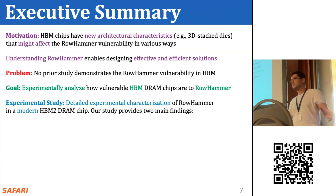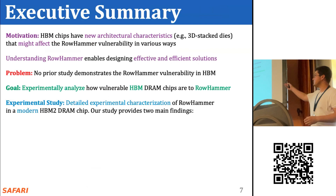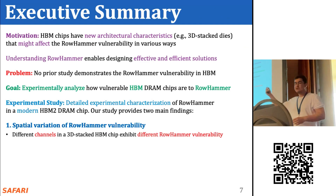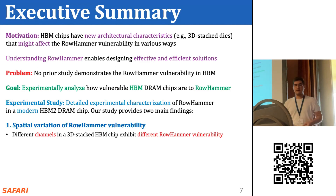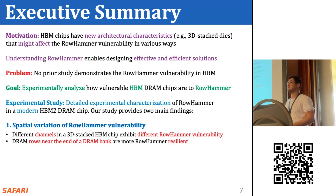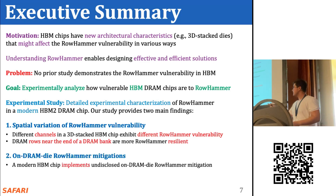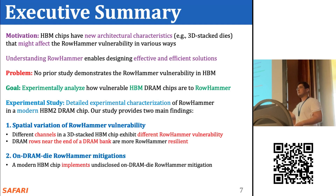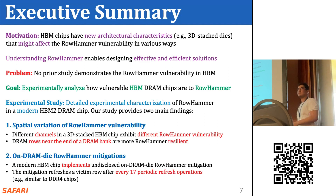We perform a detailed experimental characterization of RowHammer in a real modern HBM2 DRAM chip and provide two main findings. First, we show that there is substantial variation in RowHammer vulnerability in different physical locations of the HBM2 chip. Different channels in 3D-stacked HBM2 chips exhibit different levels of vulnerability, and DRAM rows near the end of a DRAM bank are more RowHammer resilient. Second, we find that this chip implements an undisclosed on-DRAM-die RowHammer mitigation mechanism, resembling one found in real DDR4 chips.